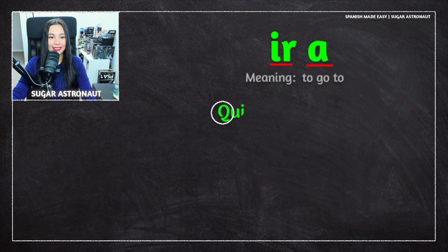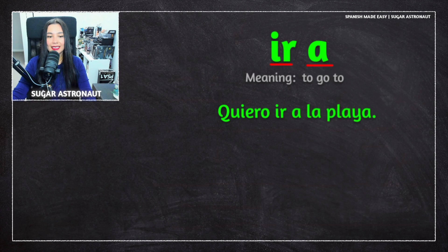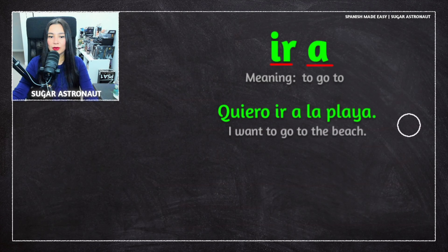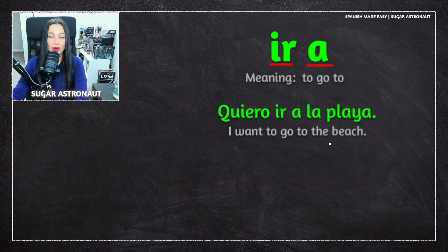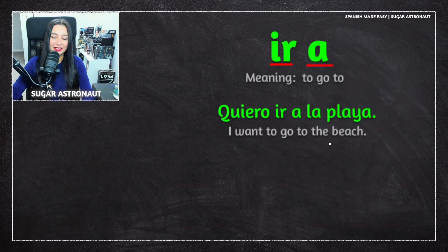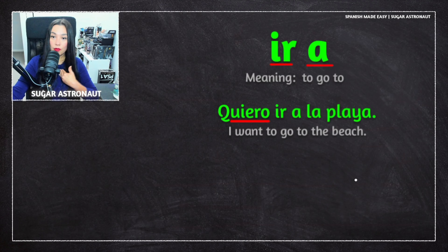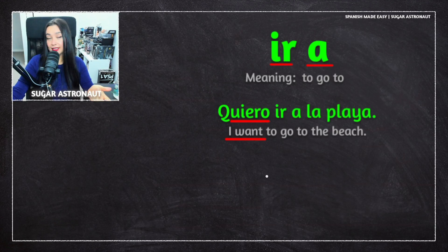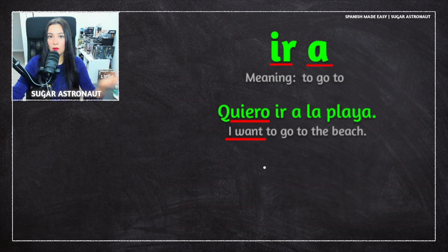For example, I can say: 'Quiero ir a la playa.' This means 'I want to go to the beach.' This is a great example if you want to let other people know where you want to go. So let's break this down and see how this works. 'Quiero' — or 'yo quiero' — we don't need 'yo', we just need 'quiero', and that means 'I want.'